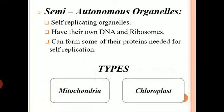So what are semi-autonomous organelles? Semi stands for half — autonomous means having certain control over themselves. Semi-autonomous organelles, with respect to the cell, are organelles which are basically self-replicating in nature. They are able to duplicate themselves whenever required, so they are not dependent on the entire cell to divide. These organelles have the power of replicating themselves whenever needed.